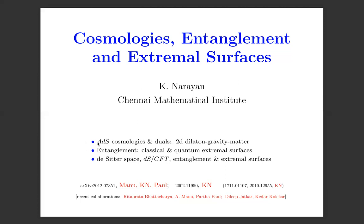I'll begin by talking about ADS cosmologies and their duals, reviewing old work. Then I'll move on to describing cosmologies in two-dimensional dilaton gravity theories. I'll talk about entanglement in terms of classical and quantum extremal surfaces in these theories. In the last part, I'll discuss aspects of de Sitter space motivated by DSCFT, and describe generalizations of the Ryu-Takayanagi formulation of entanglement.